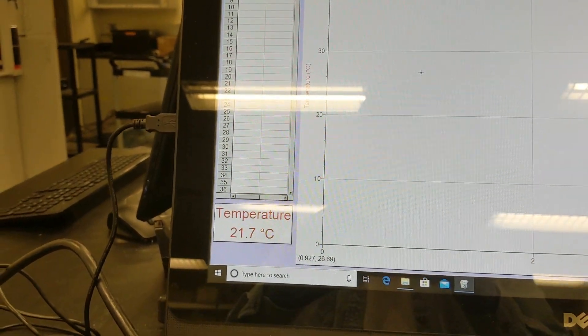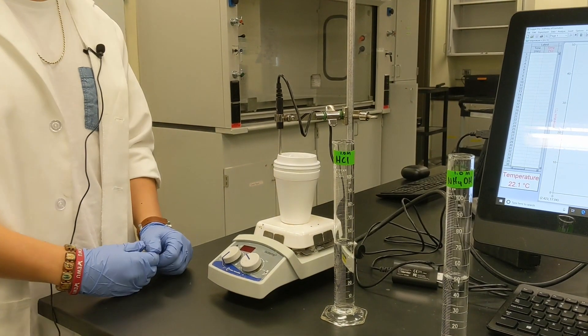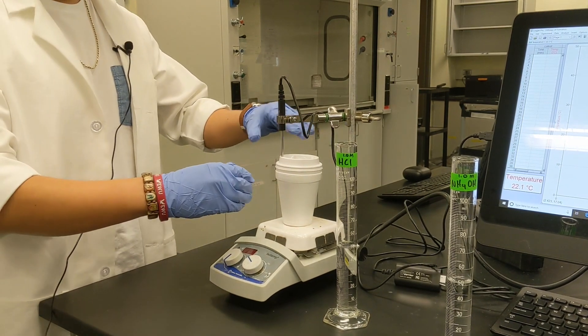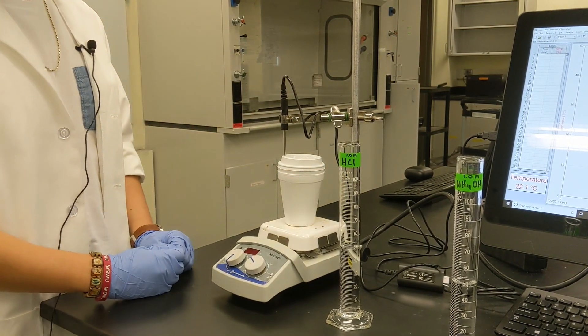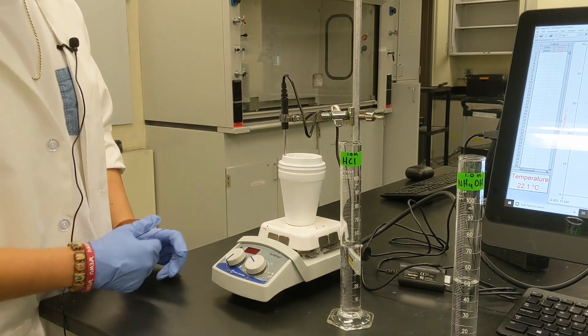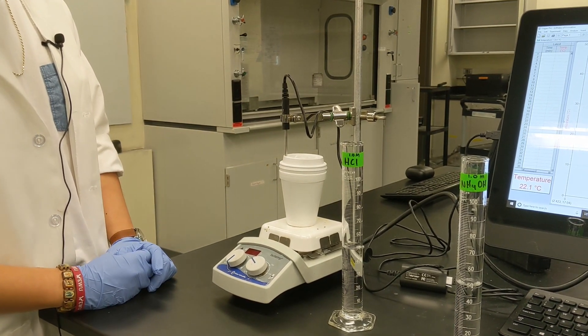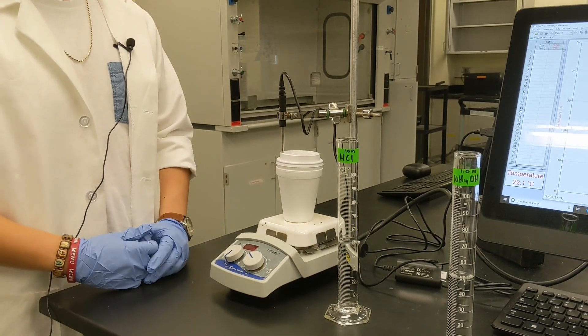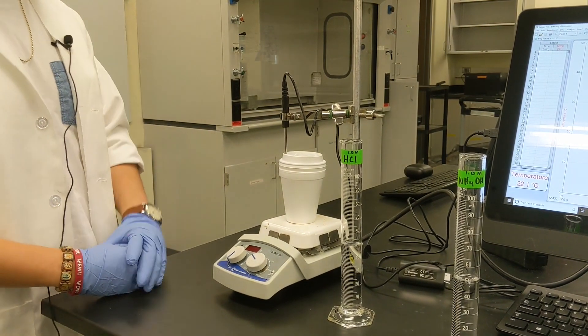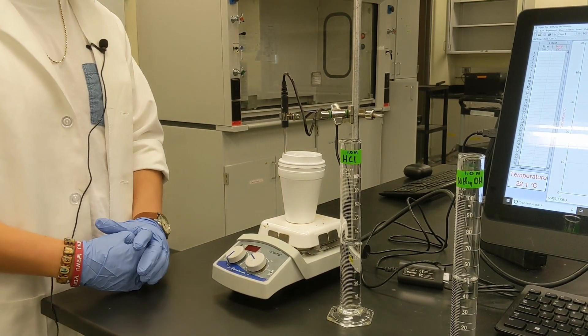What we have right now is two Styrofoam cups that's going to serve as our calorimeter. It's capped right now, and we're going to add 50 mL of our 1.0 molar HCl, and we're going to get a three-minute stabilization period to get the temperature stabilized.